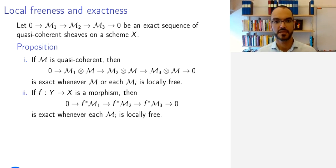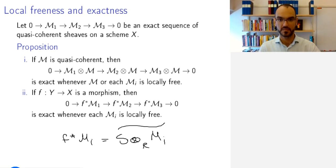And likewise, pullback preserves exactness whenever all the M_i are locally free. Again, on the level of modules, f-star of M_i is tensoring with some ring of this M_i. And again, this preserves exactness if the M_i are locally free, meaning if the M_i are free modules. So the properties of free modules translate rather neatly into properties of locally free sheaves.